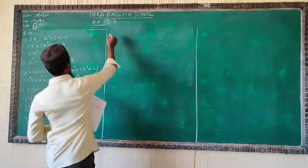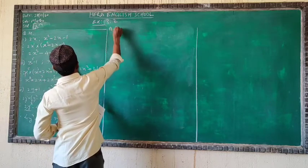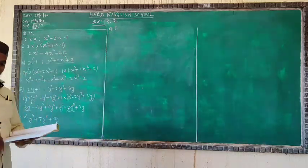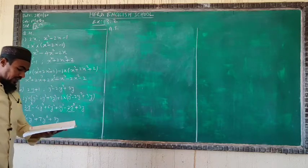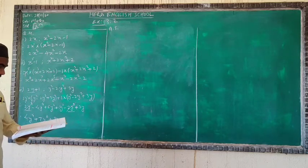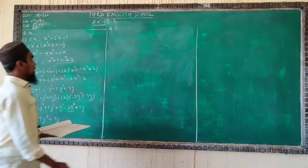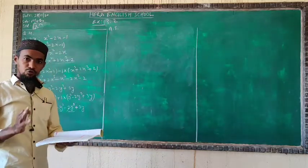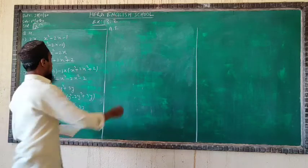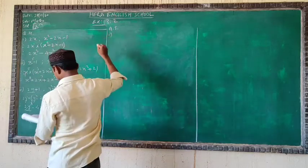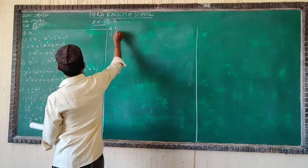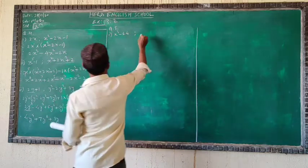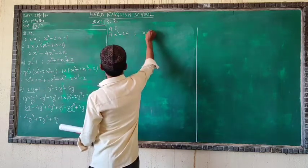Now question 5: divide the first polynomial by the second polynomial and write the answer in the form of the formula — dividend equals divisor times quotient plus remainder. First question: divide x³ - 64 by the divisor x - 4.